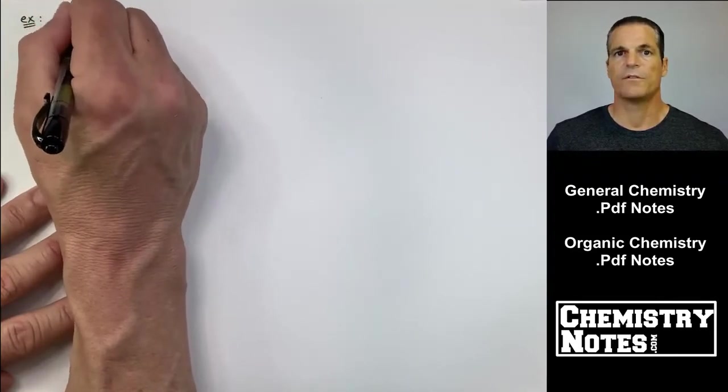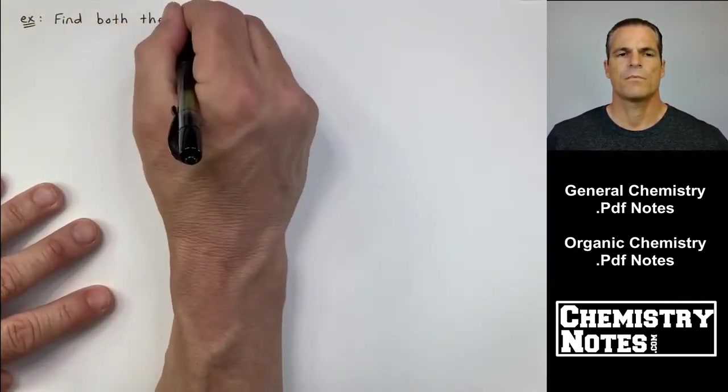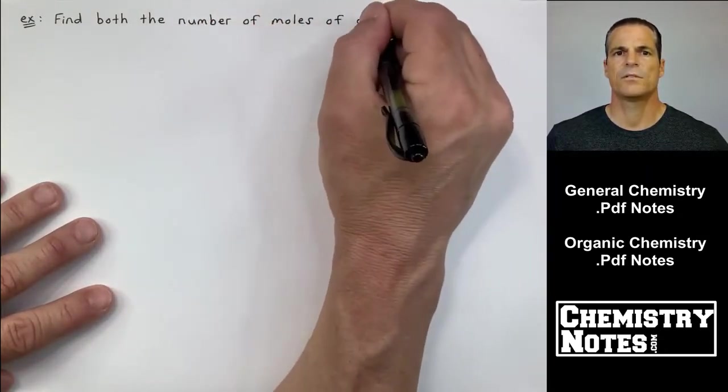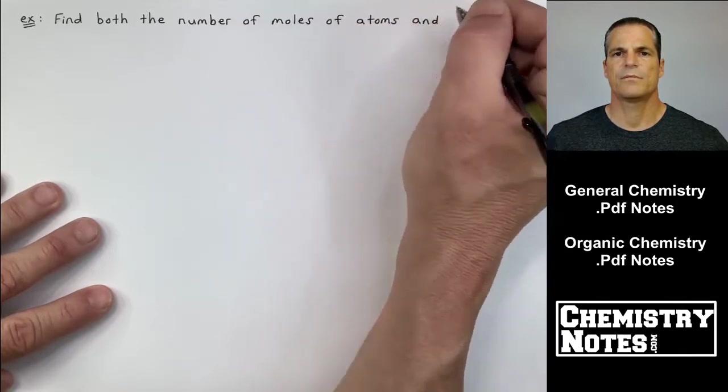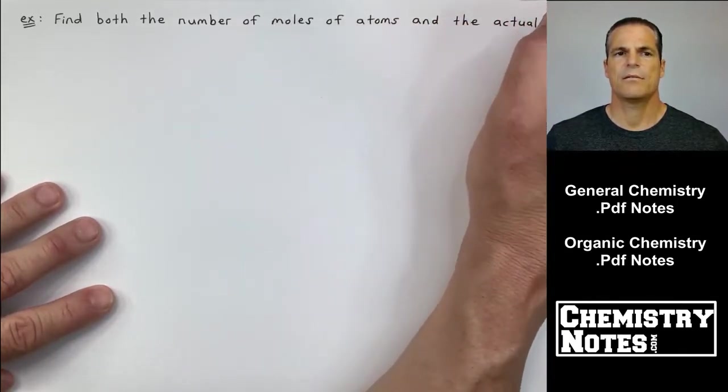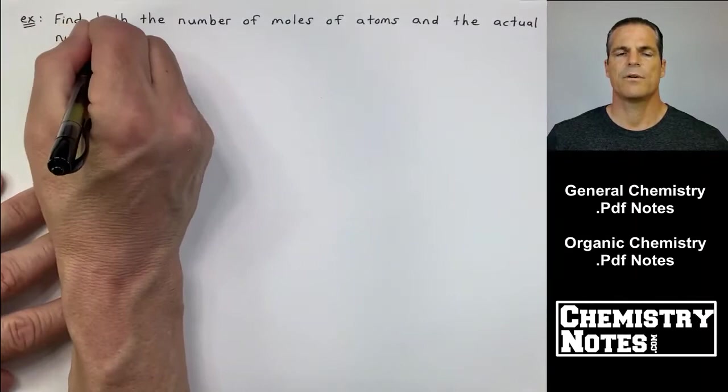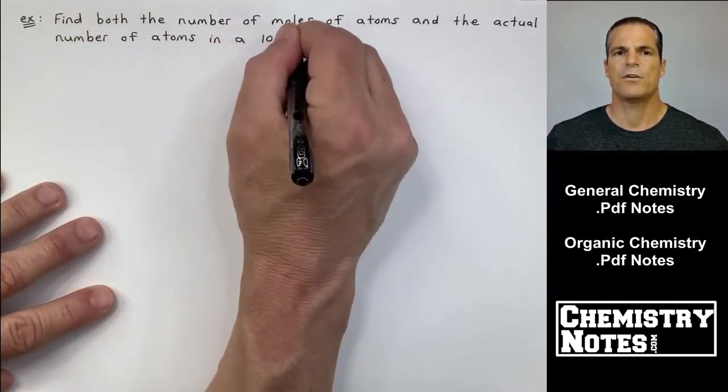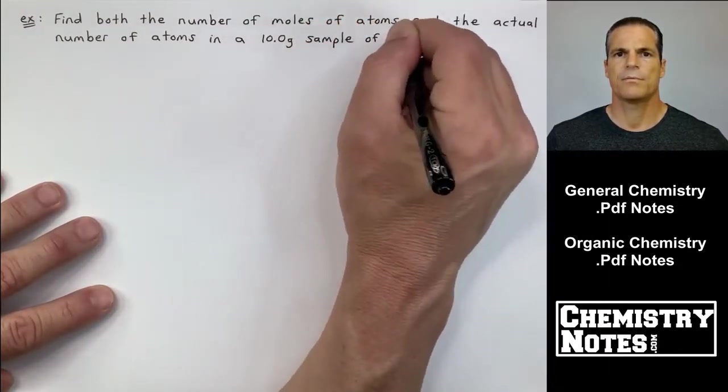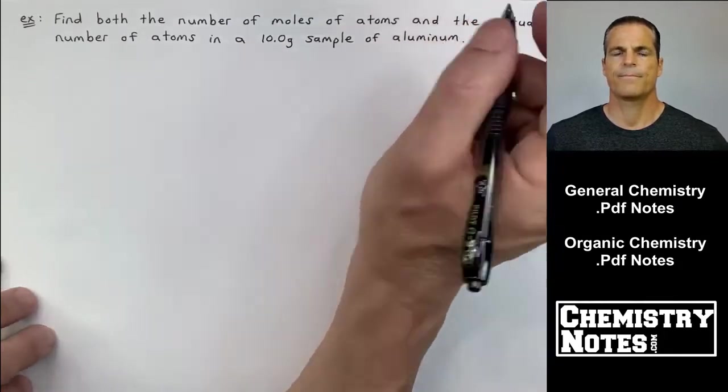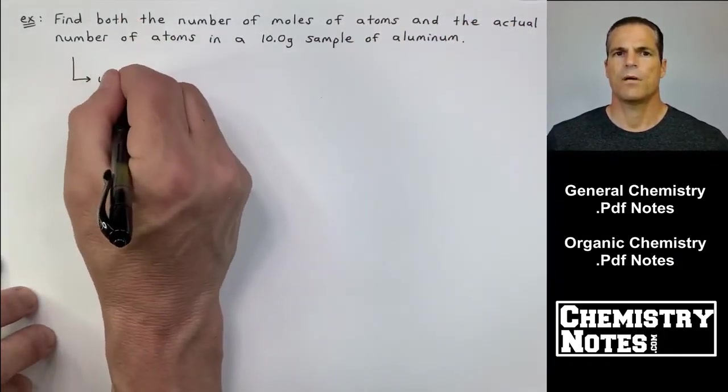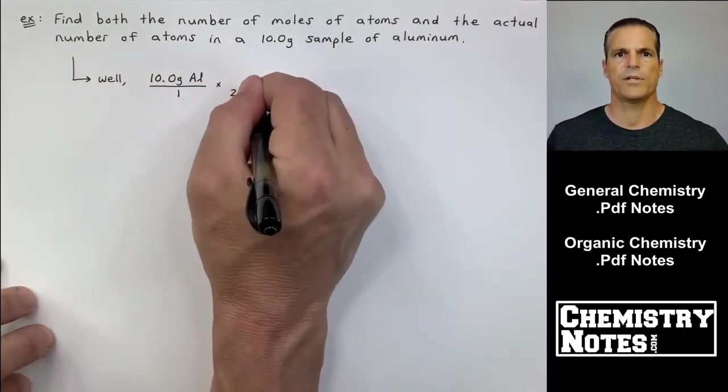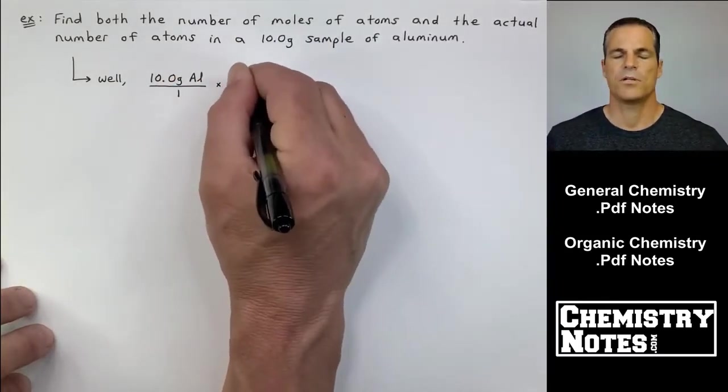Example number two of four for this video. Top of the page. Example: Find both the number of moles of atoms and the actual number of atoms in a 10.0 gram sample of aluminum. Well, I see that we only have one number in this problem, so I'm going to hone in on that number. 10.0 grams Al. Put it over one.